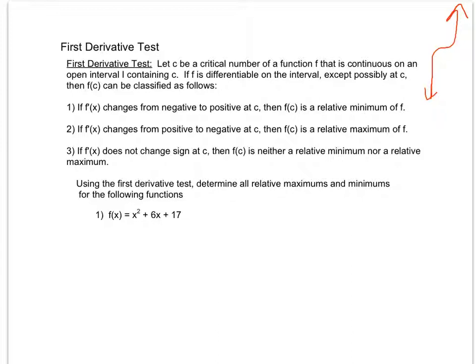So how do we determine what's happening at our critical value? If our derivative changes from negative to positive — a negative slope changing to a positive slope — we can say we have a relative minimum, a valley. If, on the other hand, our derivative changes from positive to negative, we have a relative maximum, a hill.